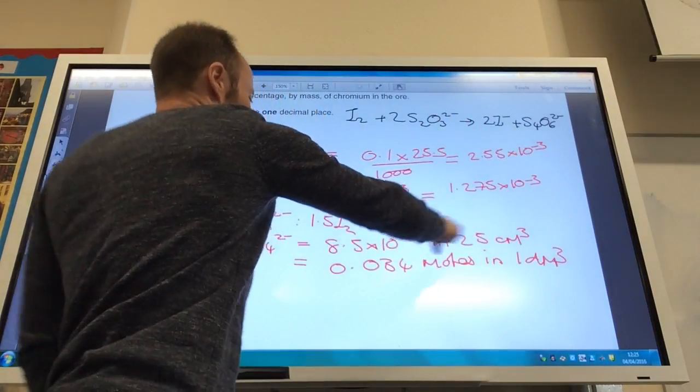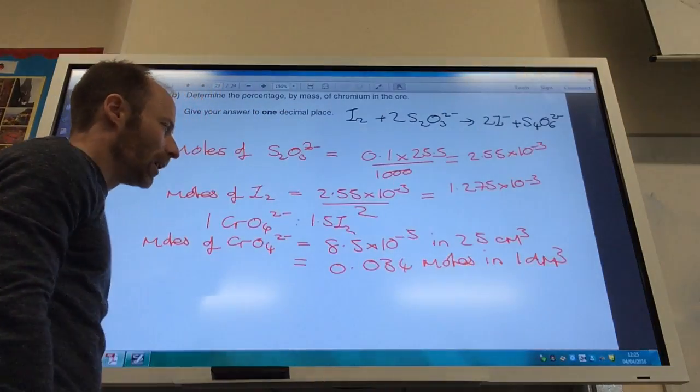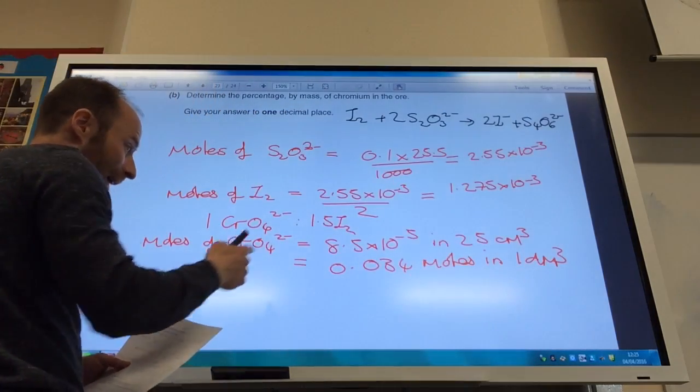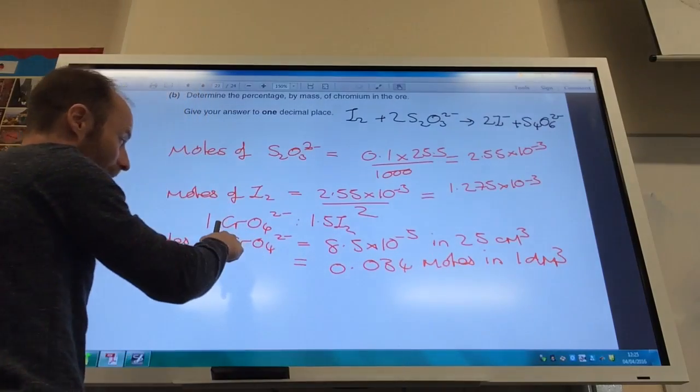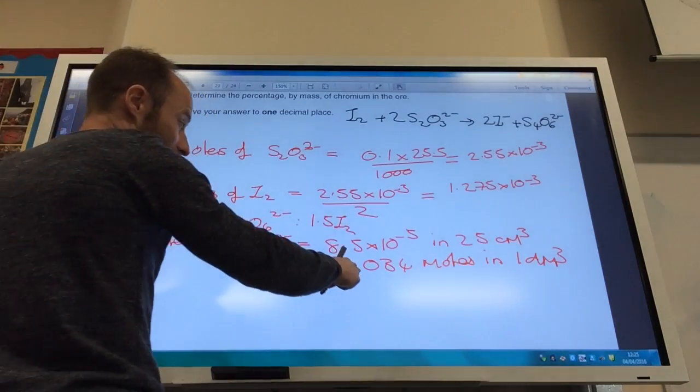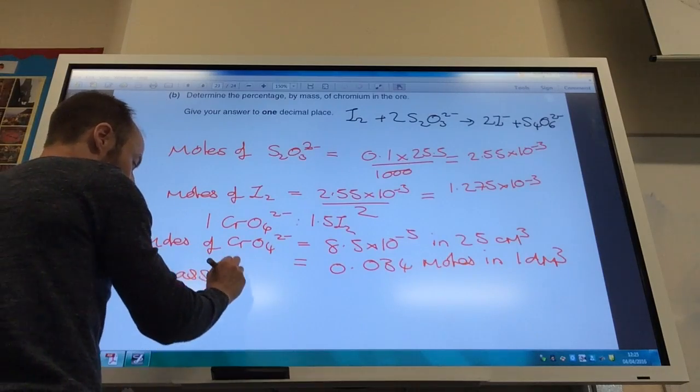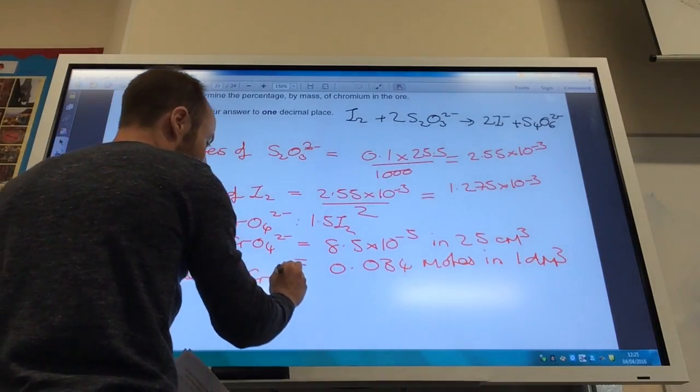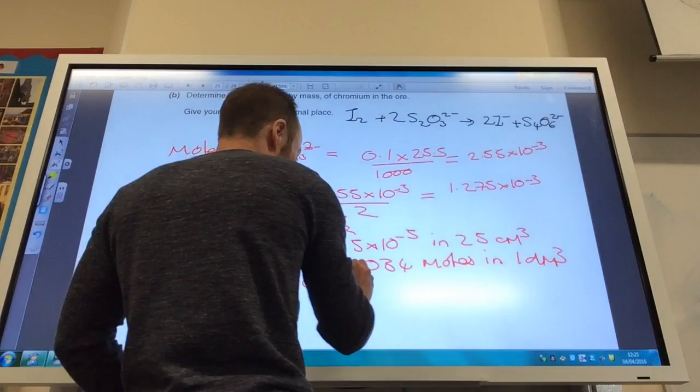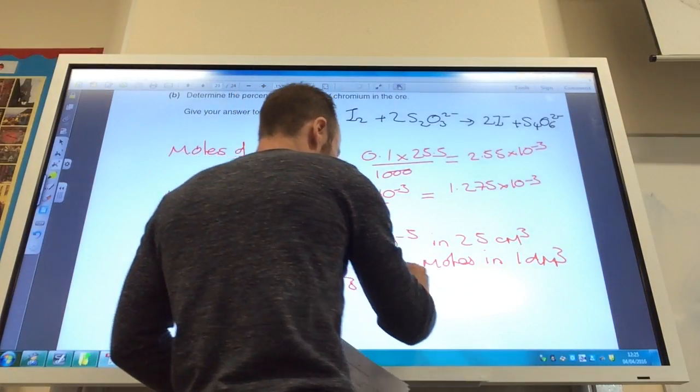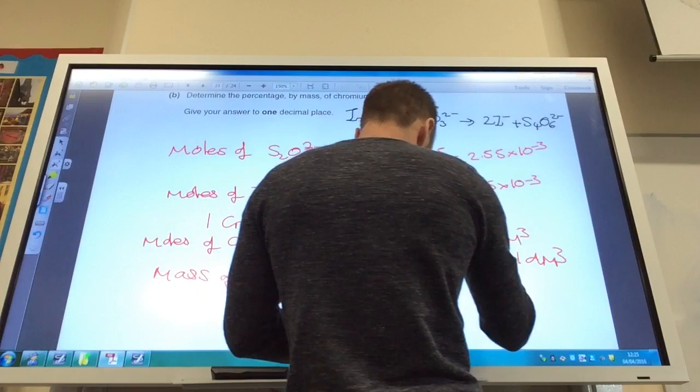So to get to that number you divide that by 25 and times by a thousand therefore you had that many moles of chromium because there's only one chromium in there so that is equivalent to the moles of chromium therefore you can work out a mass of chromium that you started with which is 0.034 times your molar mass of chromium which is 52 that gives you 1.768 grams.